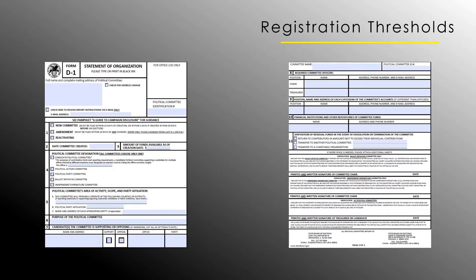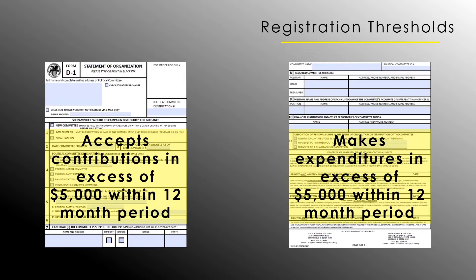To review: any group that accepts contributions or makes expenditures or independent expenditures for political purposes in excess of $5,000 within a 12-month period must register as a committee with the State Board of Elections. Additionally, any group wishing to establish a political party committee must register once the political party is created, as this committee type does not have a $5,000 threshold.